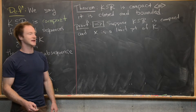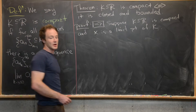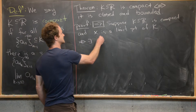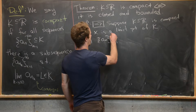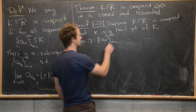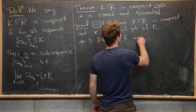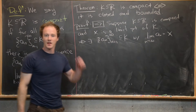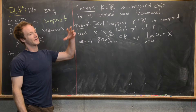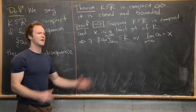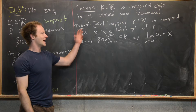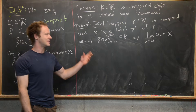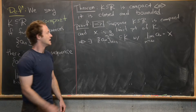Since X is a limit point of K, that means there exists a sequence a_n (n from 1 to infinity) completely contained in K with the limit as n goes to infinity of a_n equal to X. This is the sequential definition of a limit point — if you have a limit point of a set, you can find a sequence inside that set that converges to that limit point.